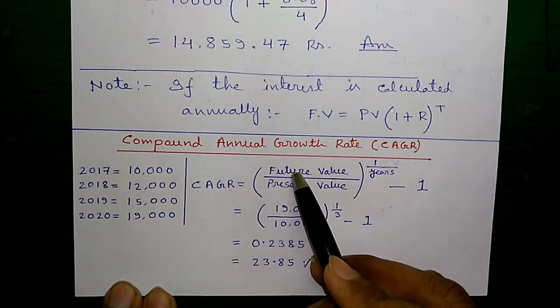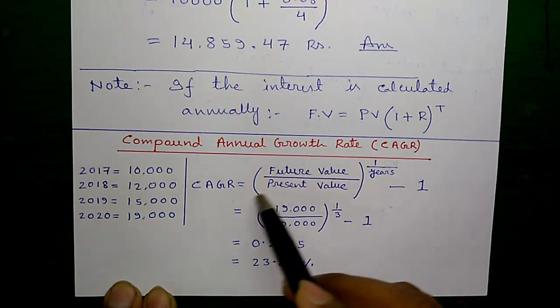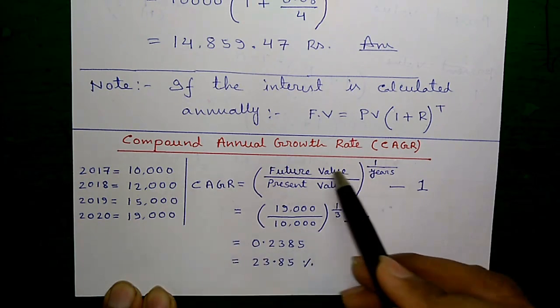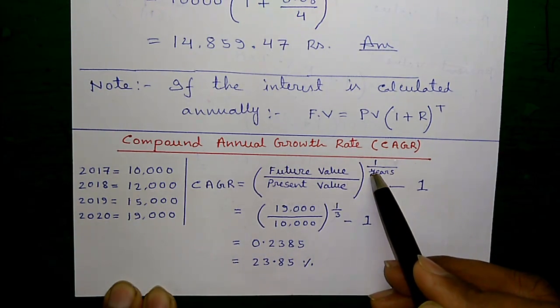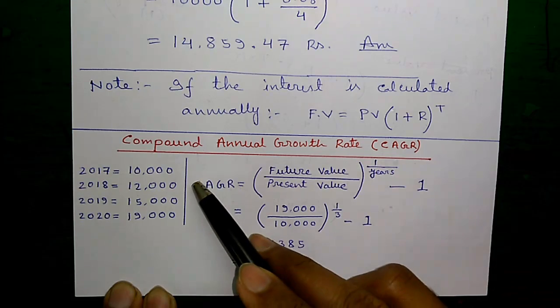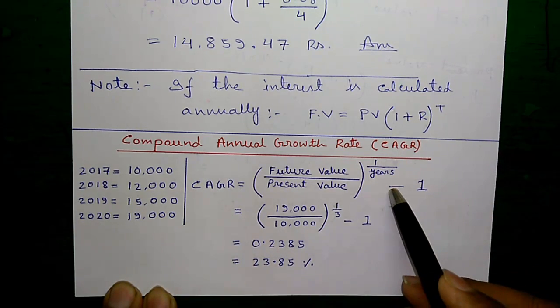CAGR equals to Future Value, which is the final value, divided by Present Value, which is initial value, to the power 1 divided by number of years. Here, for 3 years we have invested, minus 1.